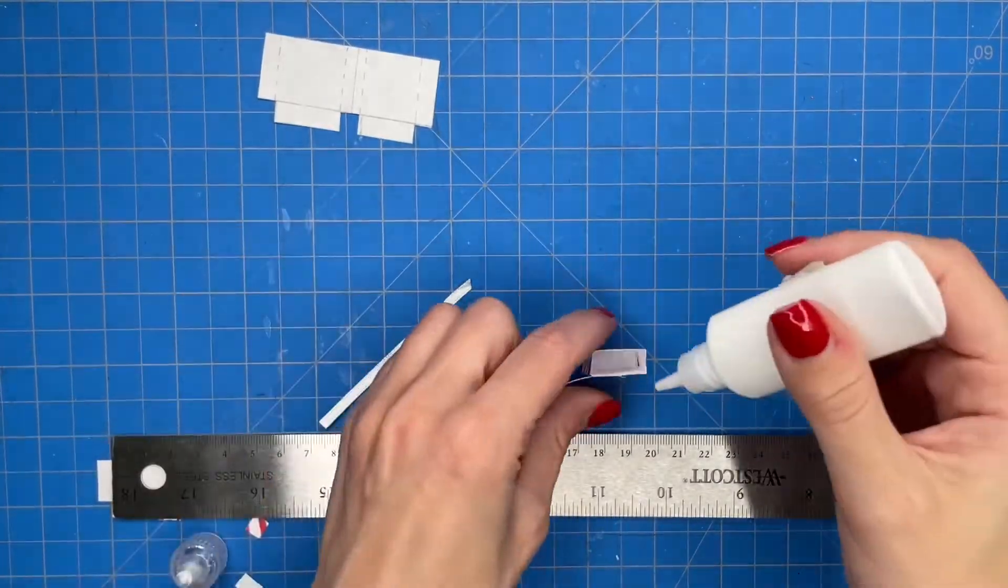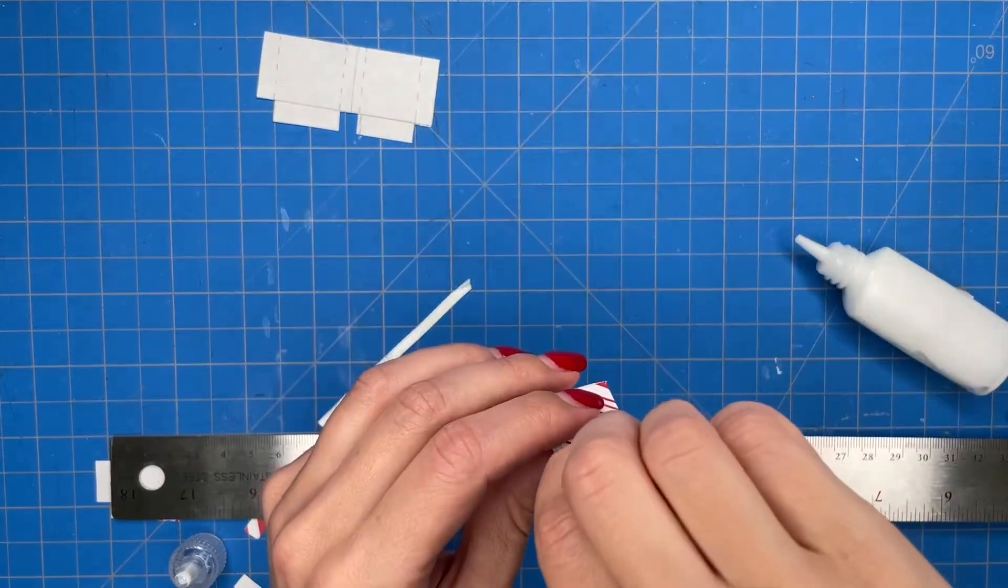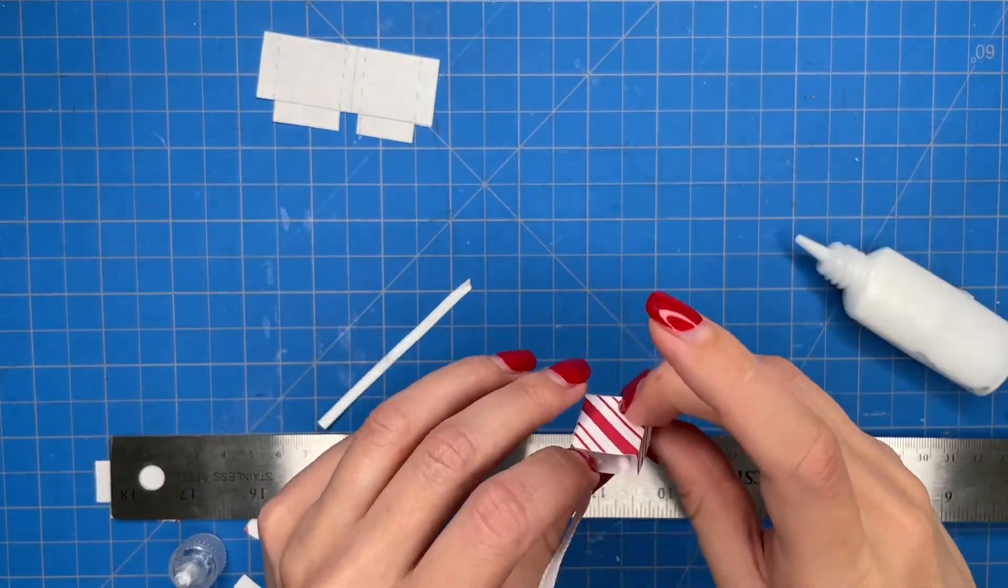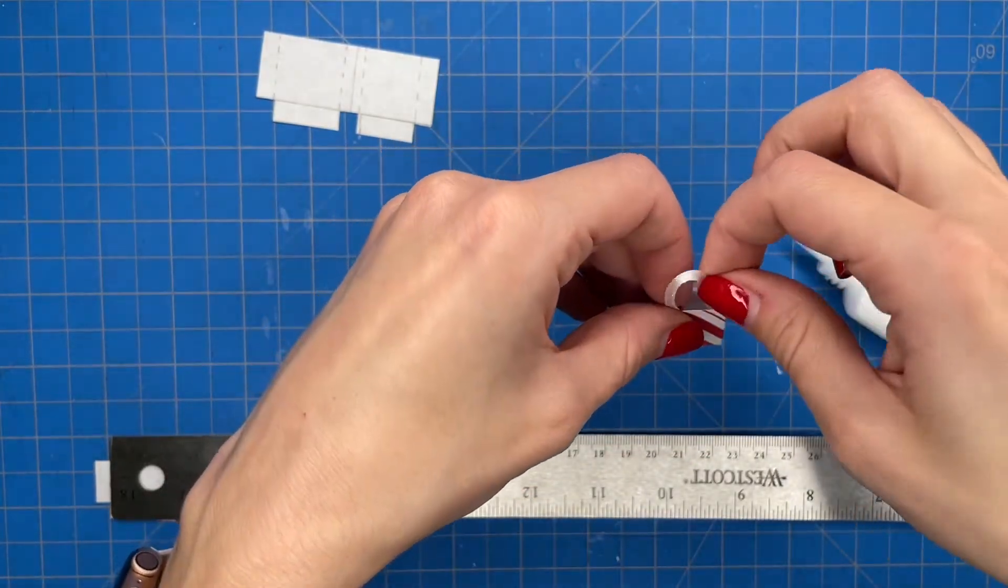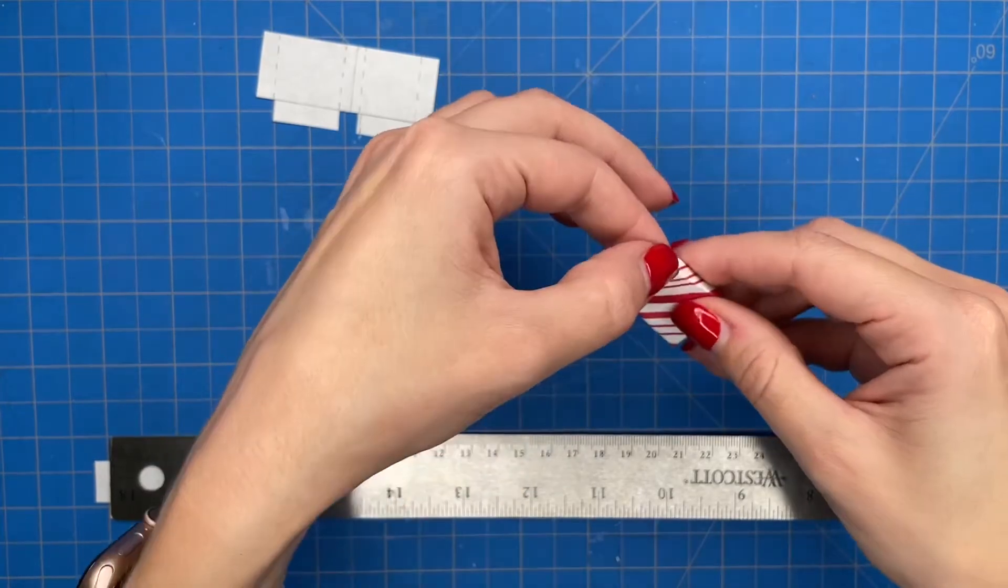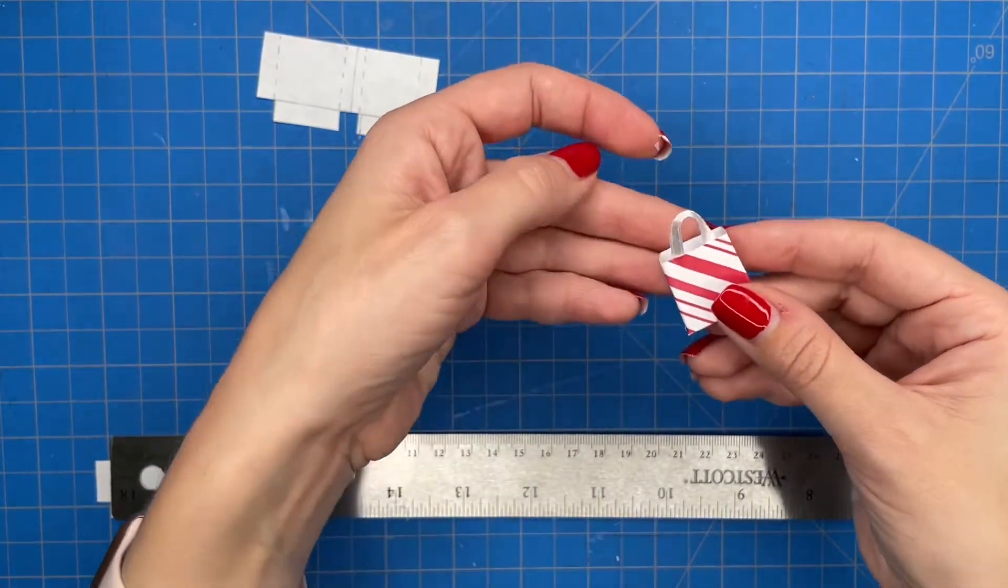To create the handles of the bag I'm just using two pieces of white ribbon. You can use any color that you want. I'm just choosing one that will match my bag. And then I add some tacky glue to the inside and then just hold down the ribbon until it is dry and the ribbon is secure in place.